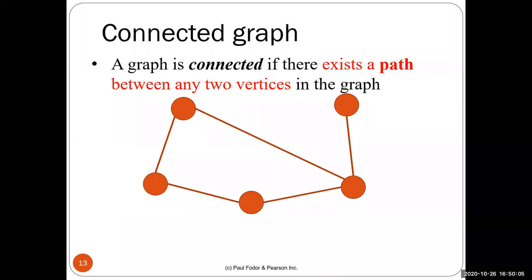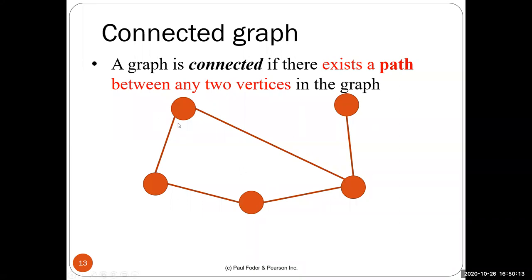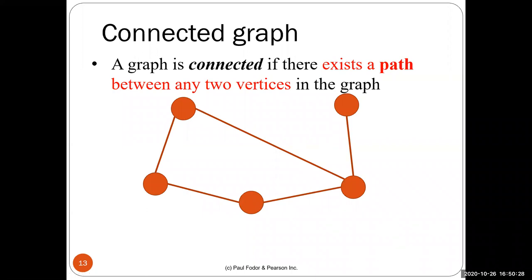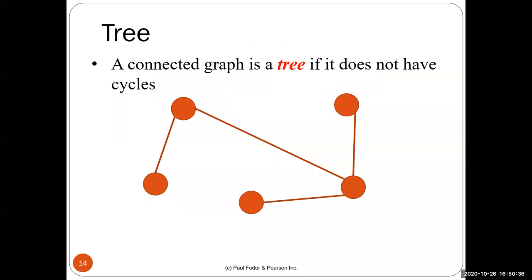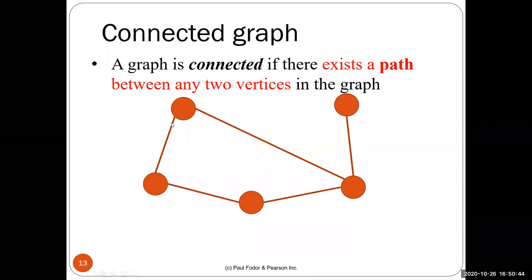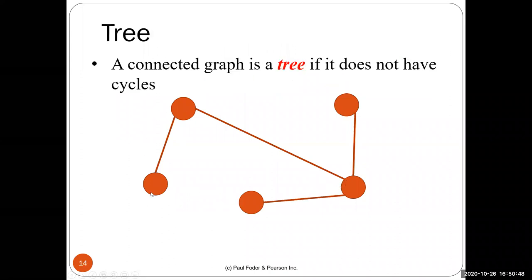A connected graph is one in which there exists a path between any two vertices. A graph with at least two disconnected parts is a non-connected graph. A connected graph is a tree if it doesn't have cycles — you can choose any vertex as the root, and the rest forms a tree with children and so on.